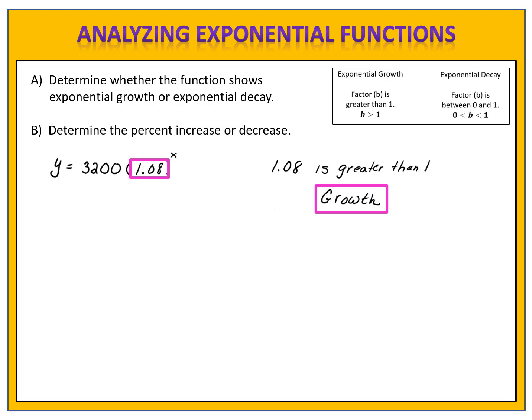Next, we want to determine the percent increase or decrease. Because this function is exponential growth, we will have a percent increase, and we begin by looking at our factor, which is 1.08. If we convert our factor into a percentage, we have 108%. We found this by moving the decimal point two places to the right, which is how we convert from a decimal to a percentage. 108% came from 100% plus some amount more. That amount more is the percent of increase. What did we add to 100% to come up with 108%?